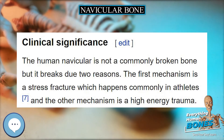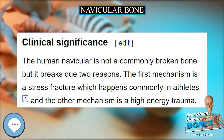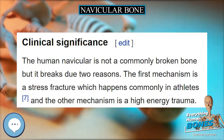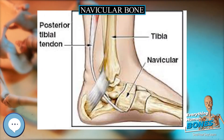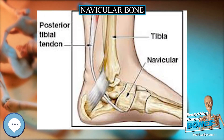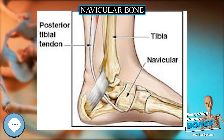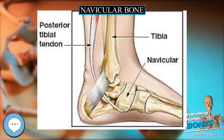The tibialis posterior is the only muscle that attaches to the navicular bone. The main portion of the muscle inserts into the tuberosity of the navicular bone.